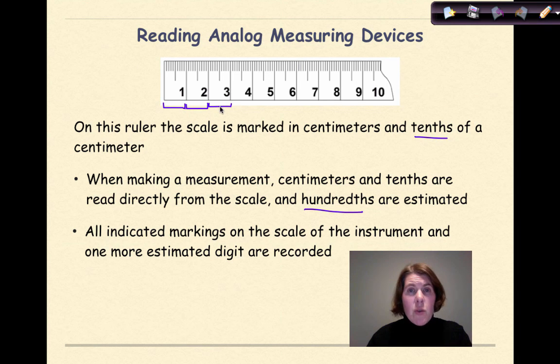Because the centimeters, we can actually read. The millimeters, we pretty much can be pretty positive about what we're reading. If we try to go any more precise than that, we'd only be estimating our measurement. So all indicated markings on the scale of the instrument and one more, one more estimated digit are recorded when we're measuring with an analog device.